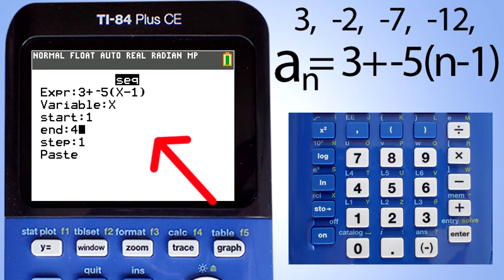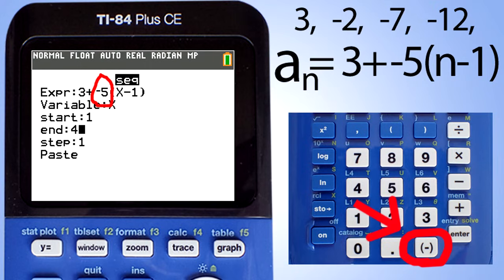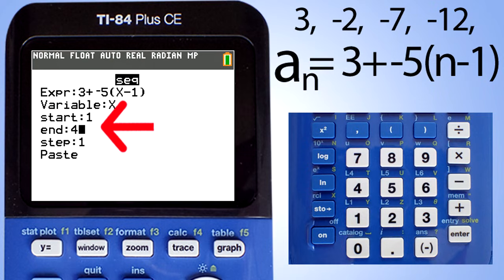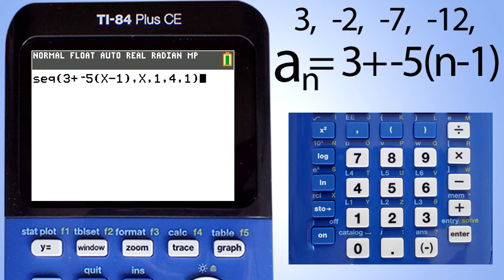Remember, when entering a negative number, use this negative sign here and not the minus sign. For the start and end, we will enter 1 and 4. This is the first term to the fourth term. Keep the step at 1. Go down to paste and press the enter key. Here is our expression with the parameters. Press the enter key again.